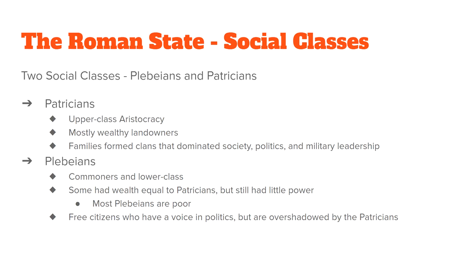Plebeians, even though they weren't upper class, were still free citizens and had a say in the happenings of the day — it's just that the system was weighted more toward the Patricians. Importantly, your social class was not based on how much money you had, but on what family you were born into. That's why some Plebeians were fairly rich while some Patricians were not — it was all about what family and clan they belonged to.